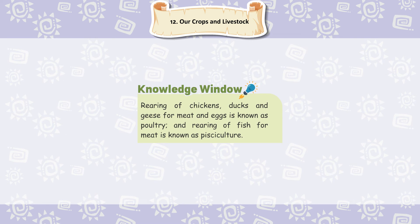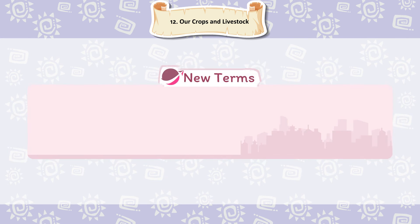Knowledge Window: Rearing of chickens, ducks and geese for meat and eggs is known as poultry. Rearing of fish for meat is known as pisciculture.